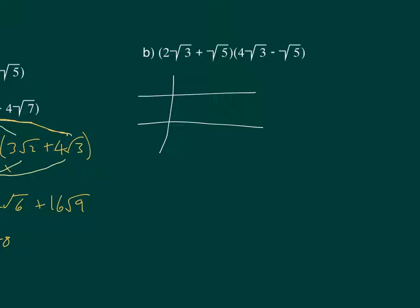So I'm setting up a grid. And in the top I'm doing these two terms. So we've got 2 root 3 and positive root 5. And then on the side we've got 4 root 3 and minus root 5.